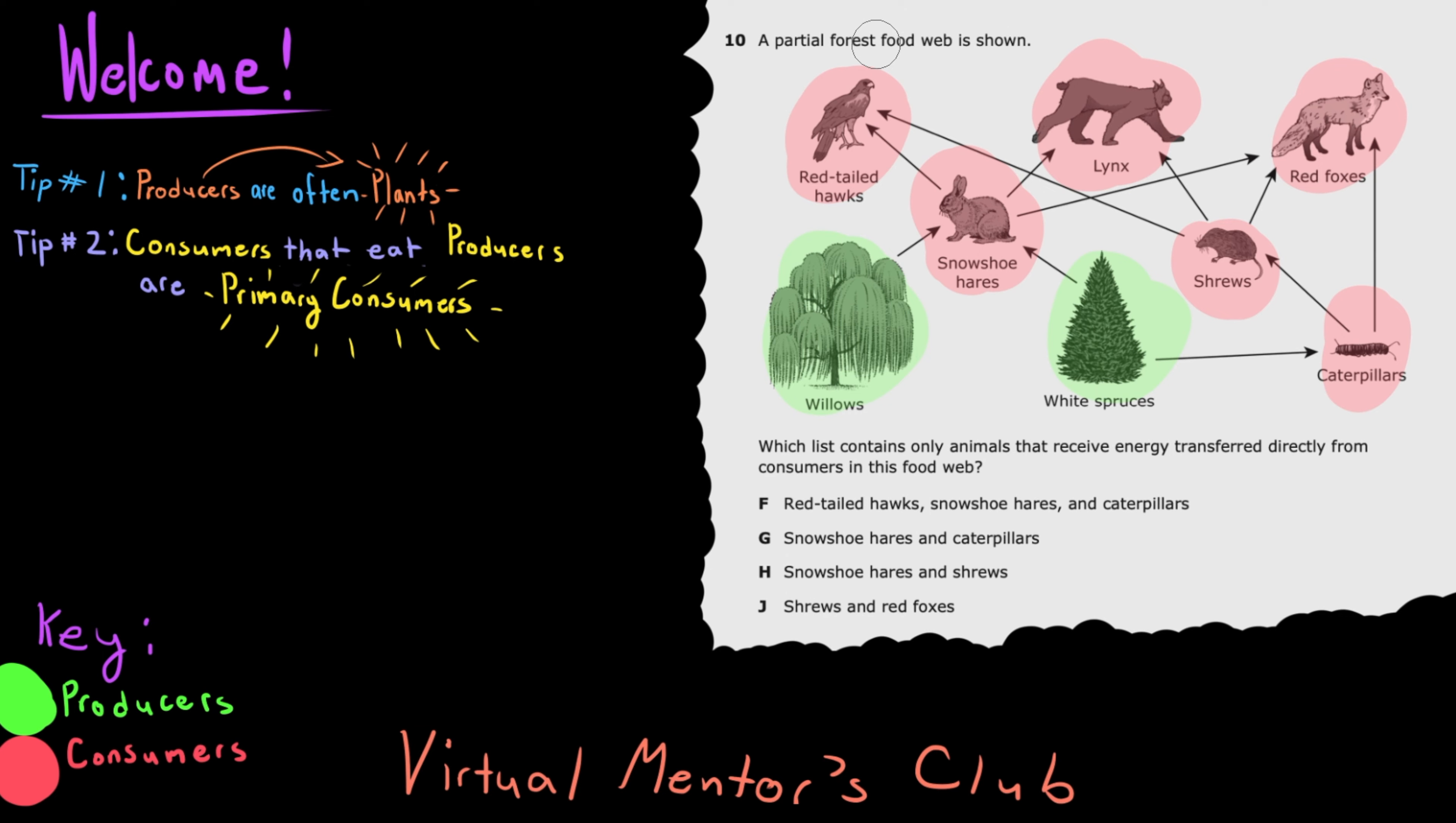Now let's look at what the question itself is asking. I'll be highlighting important information in yellow. Which list contains only animals that receive energy directly from consumers?